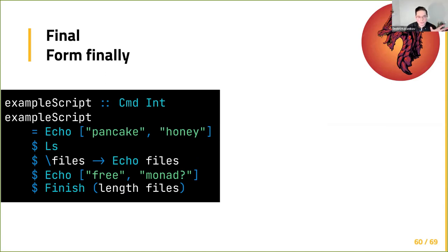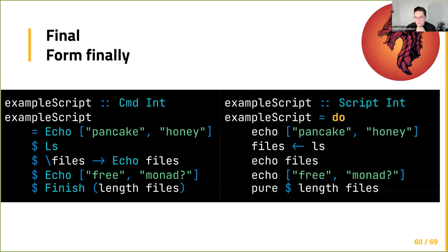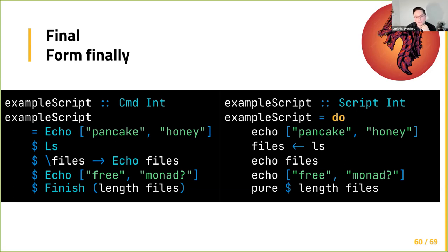With these smart constructors, we can now write our script using do-notation — a clean, sequential style with no noise from role/pure constructors. And because Script is a monad, we have the full monadic ecosystem: 'replicateM' to run a script five times, easy binding of results between scripts, and composability without writing extra glue functions.